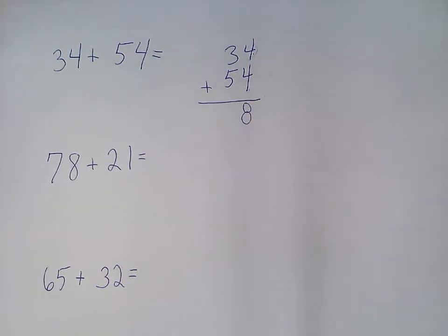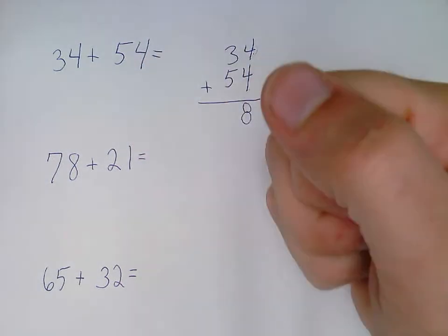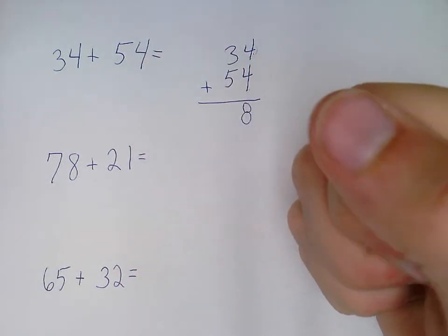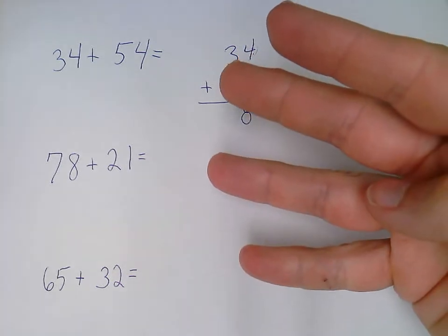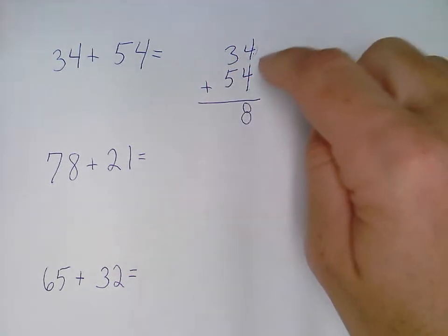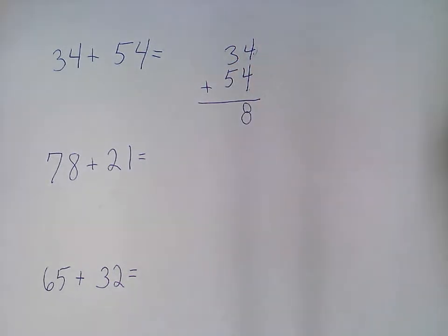The other thing I can do is grab that big number, the 4, and then count on: 5, 6, 7, 8. So I can count on with the other number.